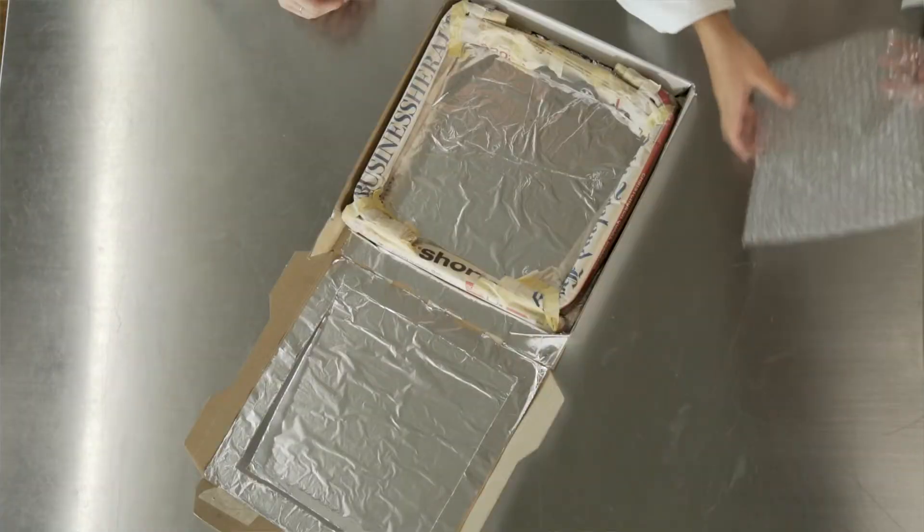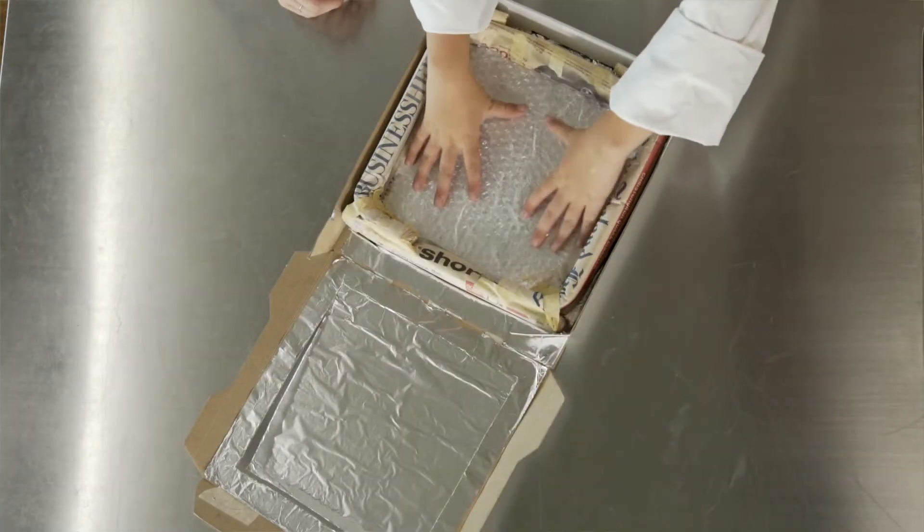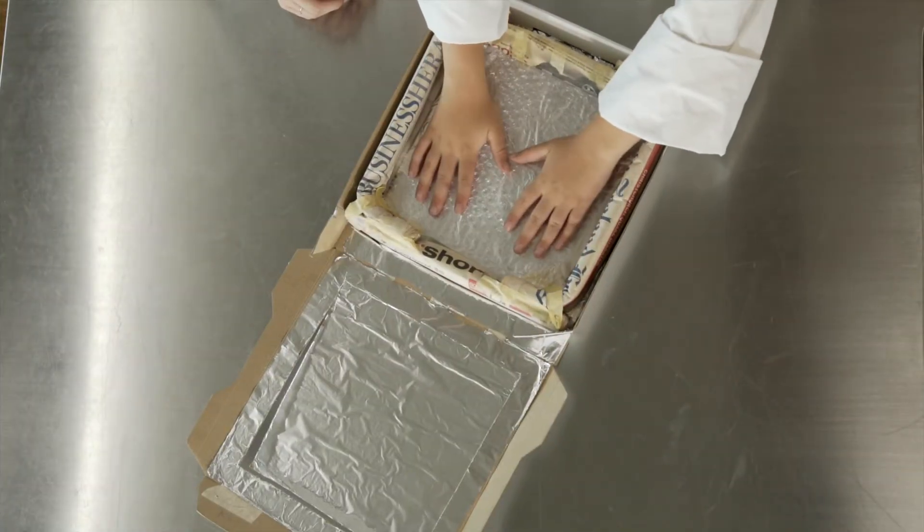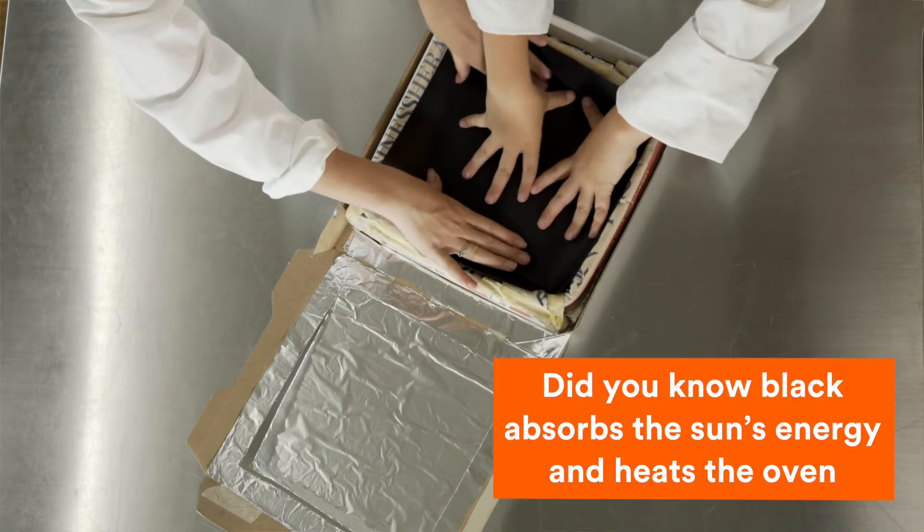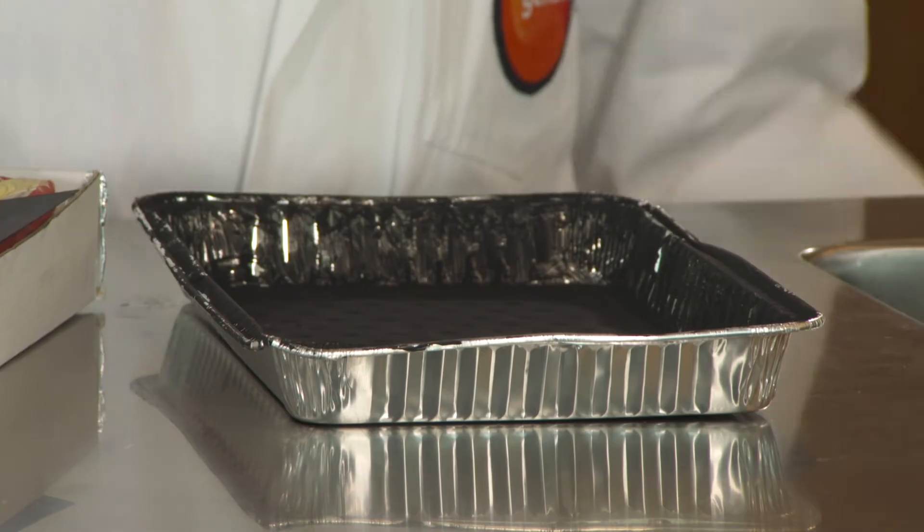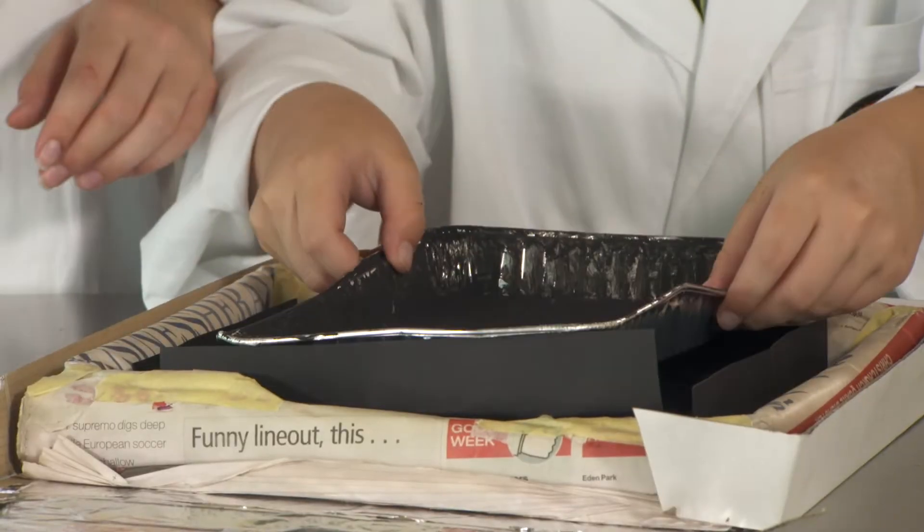If you want, you can insulate the bottom with bubble wrap. The air bubbles trap the heat. Add black colored card on the bottom of the inside of the box. Then, add the black painted aluminum tray and put it over the top of the black card.